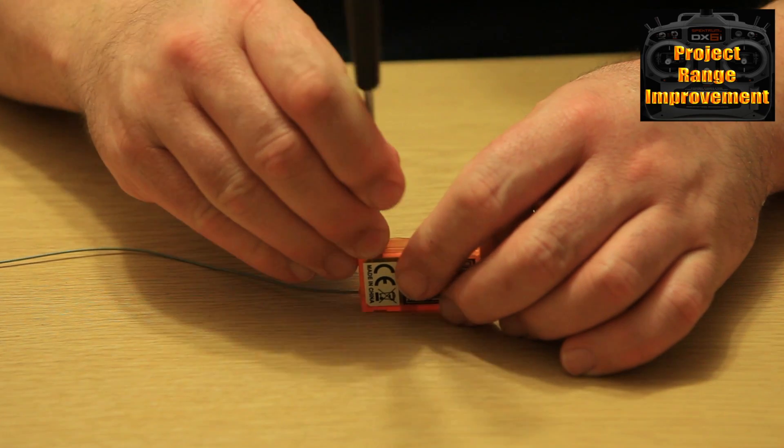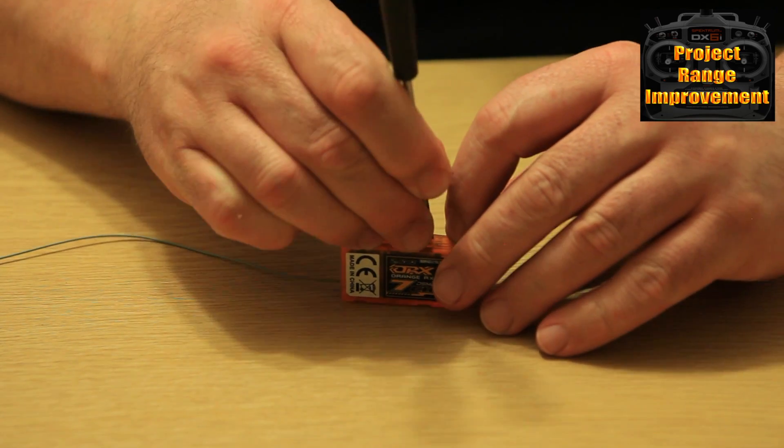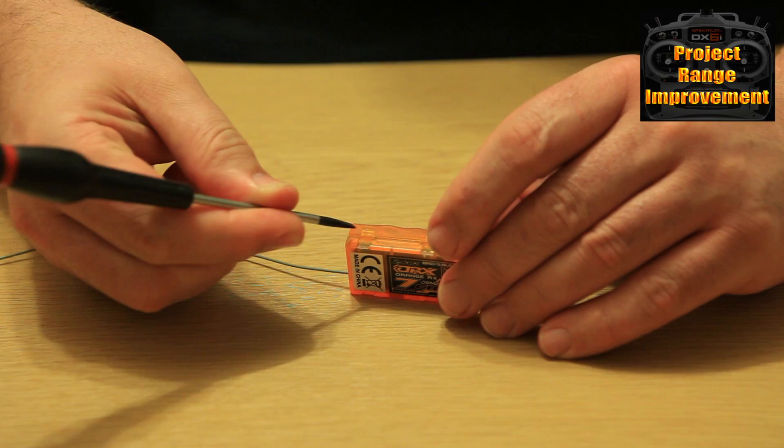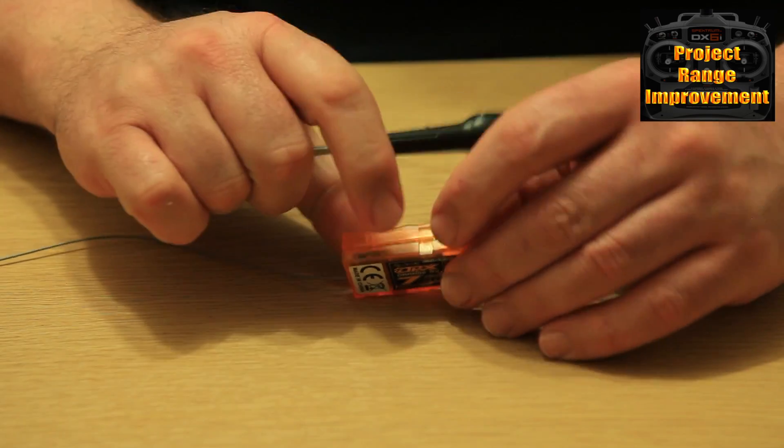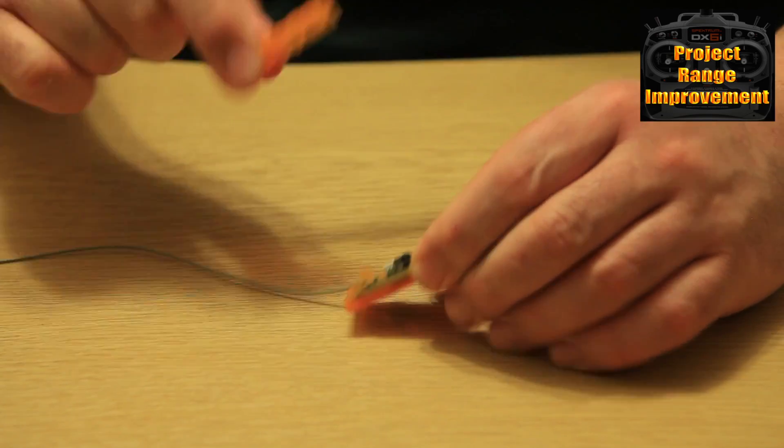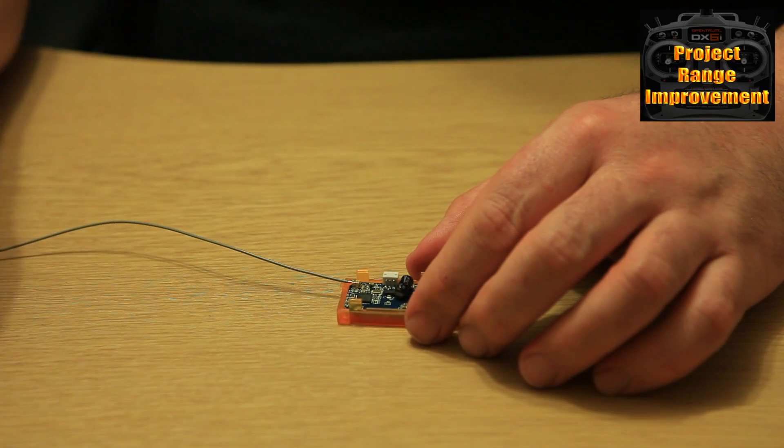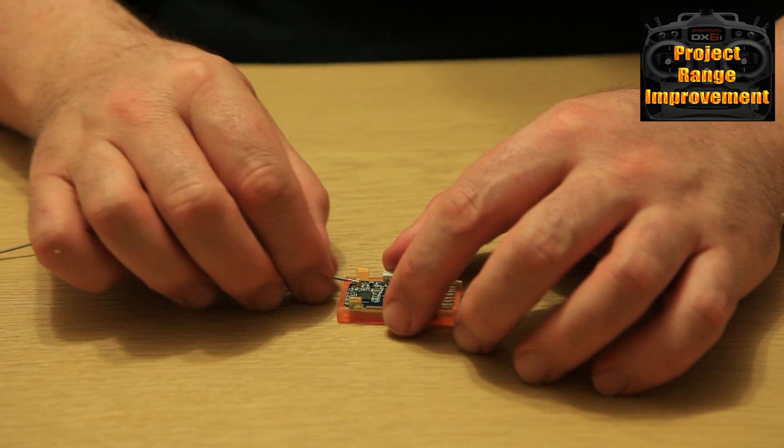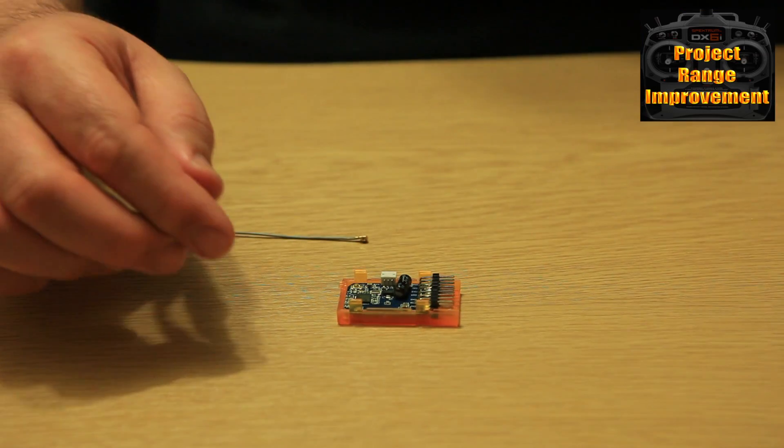I'm not going to make a meal of it because it really is that simple. Take a little flat-bladed screwdriver and insert it in the two holes on the side of the receiver. In here you have a UFL connector.